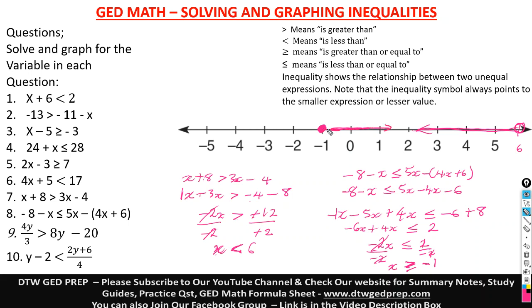There are several ways tutors represent the number line. The GED does it this way — on a horizontal line. In some textbooks you may see it drawn vertically, where a line is extended, the circle symbol is drawn at the value, and the arrow goes in the appropriate direction. If it's a greater than or equal to symbol, shade the circle. The GED graphs it on the horizontal number line.